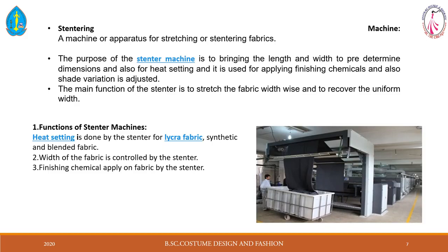The stentering process passes the fabric to maintain uniform width. Heat setting is done by the stenter — it is like ironing. Heat setting by stenter is done for lycra fabrics, synthetic and blended fabrics. The width of the fabric is controlled by the stenter. Finishing chemicals are also applied on the fabric by the stenter — the fabric is fed into the stentering machine where chemical finishing treatment is applied uniformly.